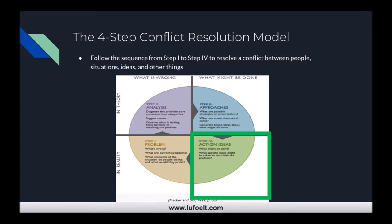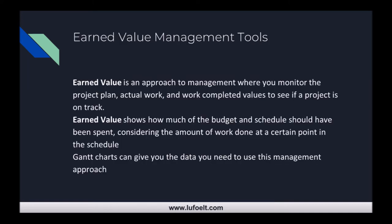That is the four-step conflict resolution model — a very effective approach. I think you can even show this to the people involved so they understand how you're approaching the problem, or draw it on a whiteboard. If they understand the process, they're a lot more likely to participate and less likely to get frustrated. Now we're moving into earned value management, which is an approach where you monitor the project plan, the work, and the completed values to see if a project is on track.